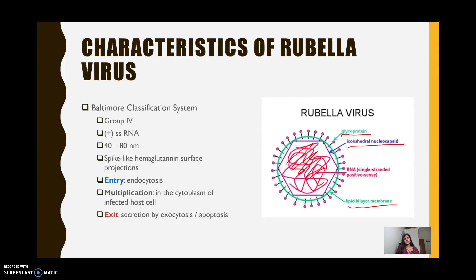The size of the virus varies from about 40 to 80 nanometers. Entry of the virus into the host cell happens via endocytosis. Multiplication or replication happens in the cytoplasm of the infected host cell, mainly because this virus is a positive-sense single-stranded RNA — if it were DNA, it would replicate in the nucleus instead. Exit of the virus happens through secretion by exocytosis or apoptosis, in which case the host cell would just die.